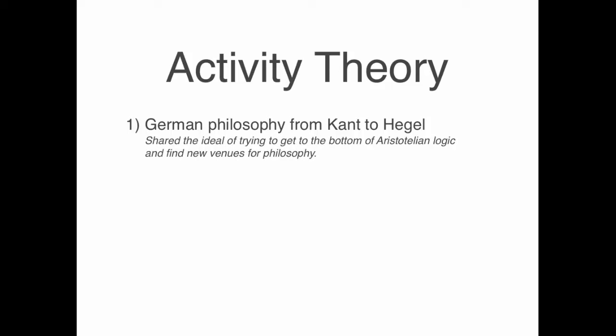Activity Theory has a threefold origin. We find the classical origin in German philosophy, from Kant to Hegel. While the German thinkers were very diverse, they generally shared the ideal of trying to get to the bottom of Aristotelian logic and find new venues for philosophy. The second origin pertains to the writings of Marx and Engels, which are often perceived as negative because of their political connotations, but they both contributed largely to understanding the division of labor.